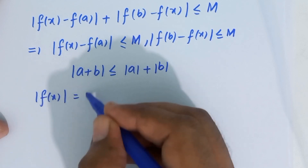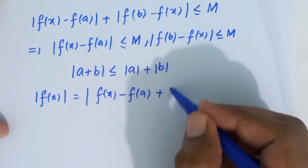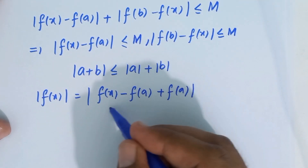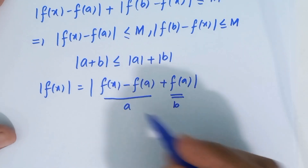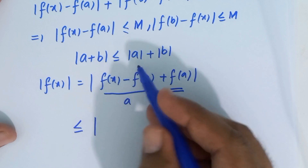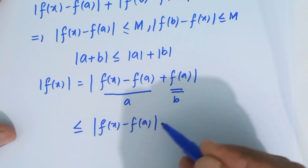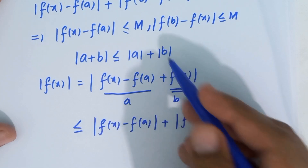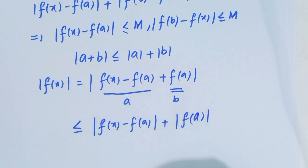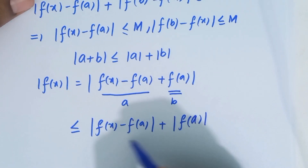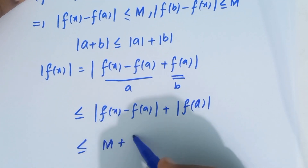In our case, if we set a = f(x) − f(a) and b = f(a), then by the triangle inequality |a + b| ≤ |a| + |b|, we get |f(x)| ≤ |f(x) − f(a)| + |f(a)|. Now by using inequality (1), replacing |f(x) − f(a)| with M, we get |f(x)| ≤ M + |f(a)|.